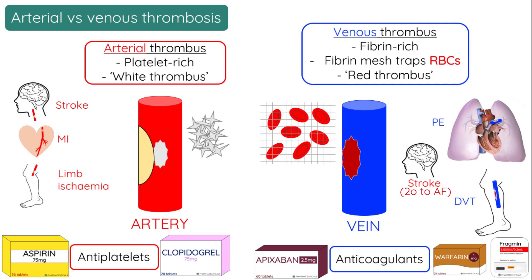The most common cause of embolic stroke is atrial fibrillation, where blood in the atria becomes stagnant, leading to thrombus formation. If this thrombus destabilises and embolises, it can be forced by the heart up into the cerebral arteries, leading to stroke.